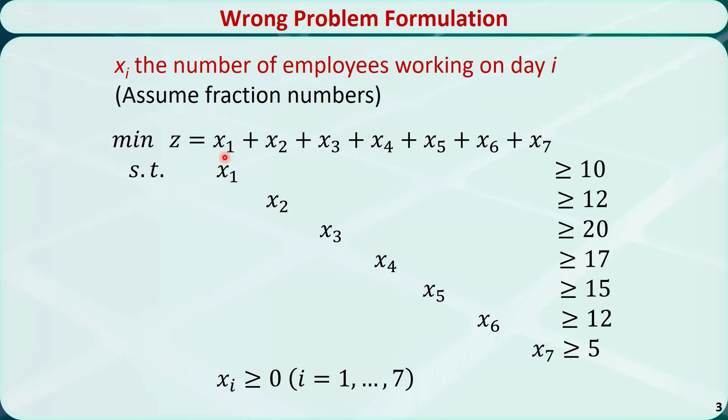if an employee works from Monday to Friday, he or she is counted in x1, x2, x3, x4, and x5. So here, this employee is counted 5 times in the objective function.